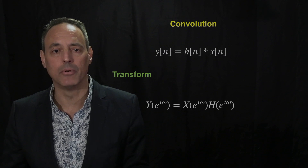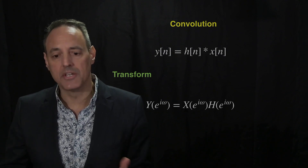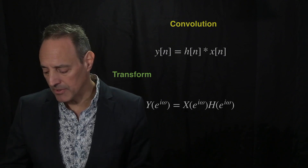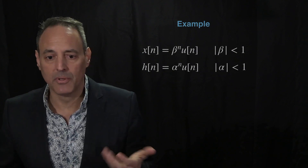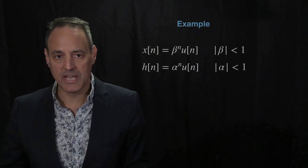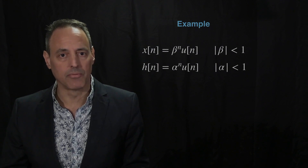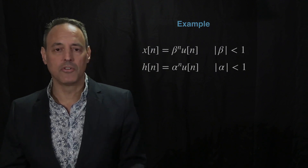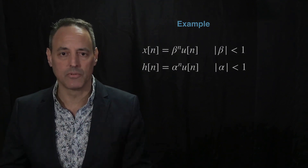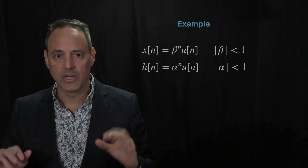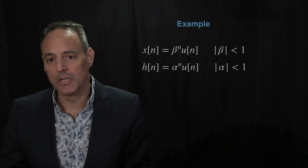You just take these two Fourier transforms, multiply them together, and you have your output y — a very simple and nice way to solve this. Computationally it's wonderful: all you have to do is two Fourier transforms, a multiplication, and an inverse Fourier transform, and you've got your solution to the LTI system.